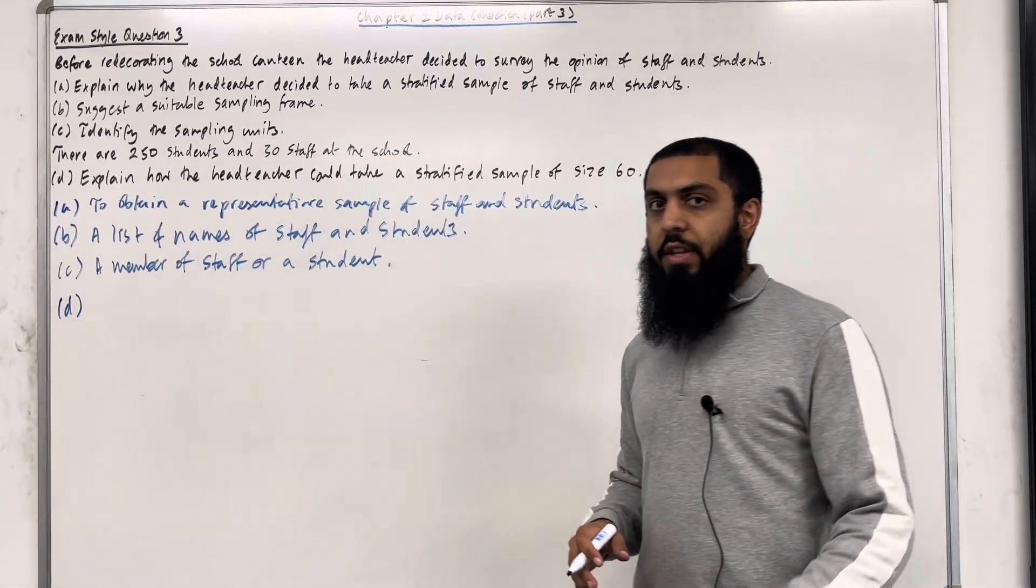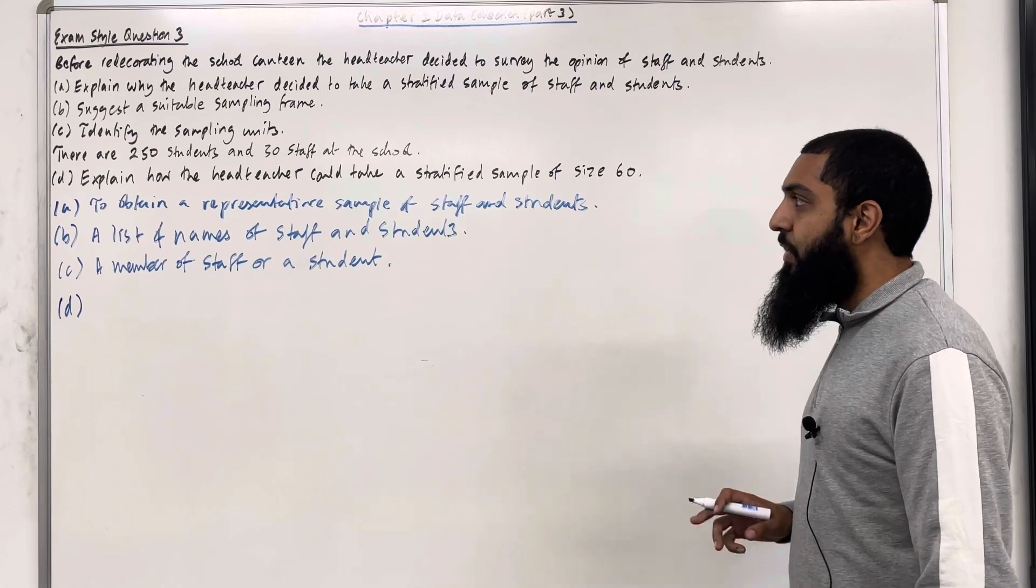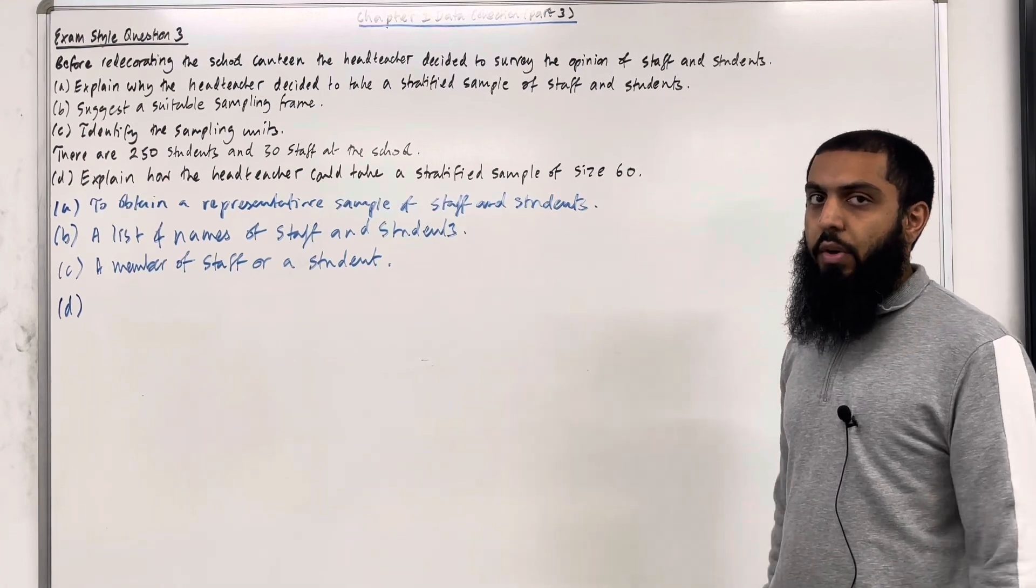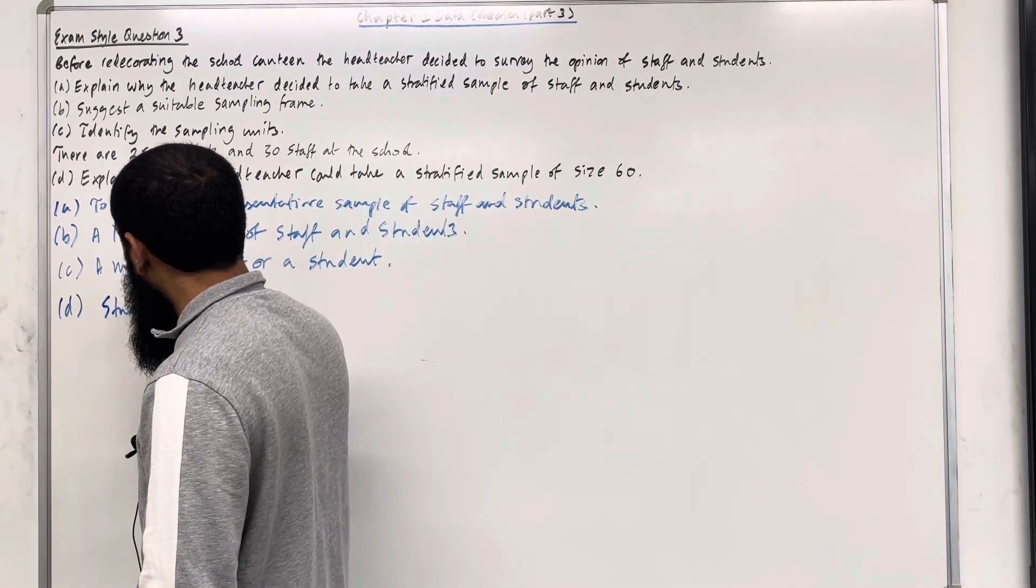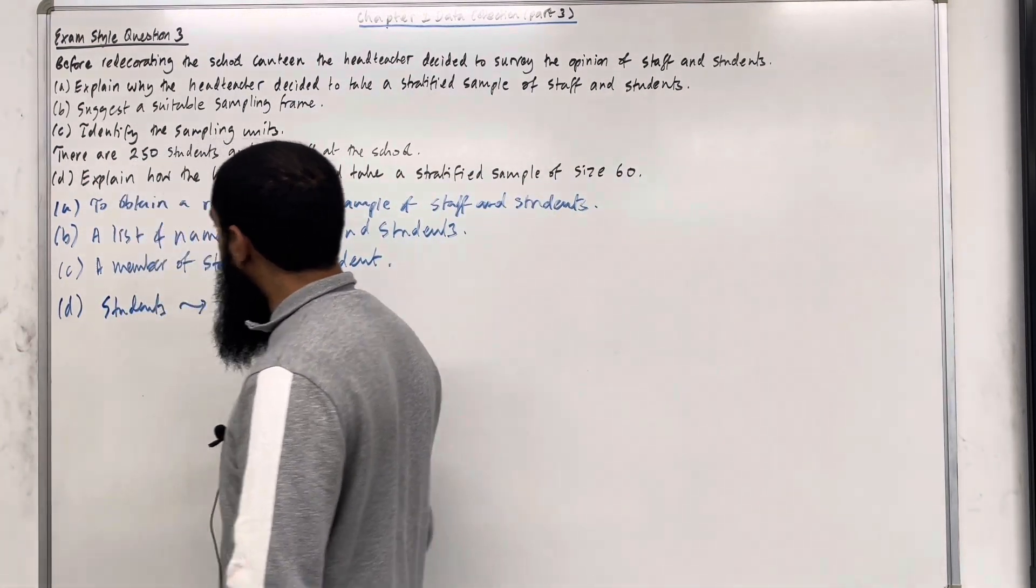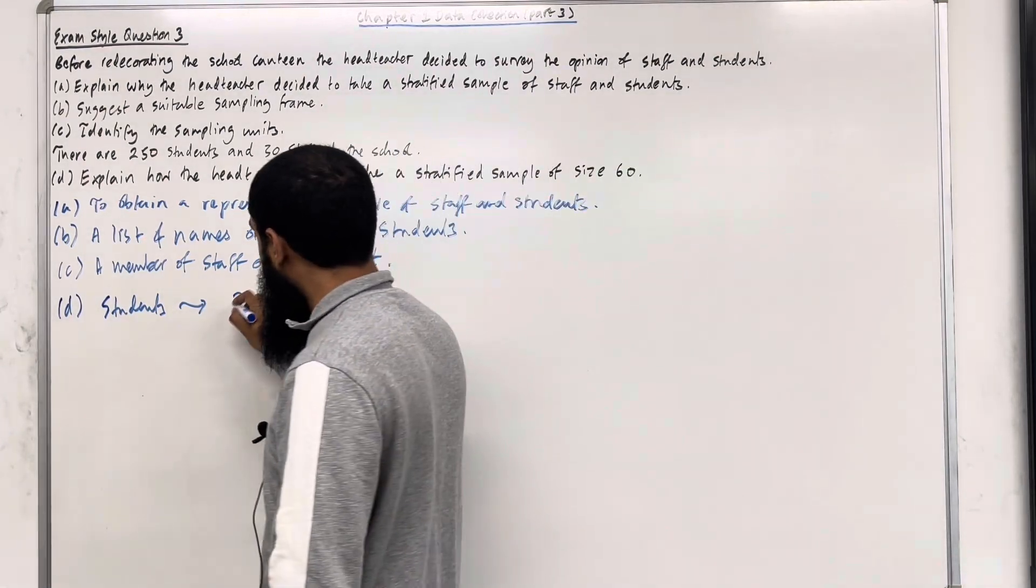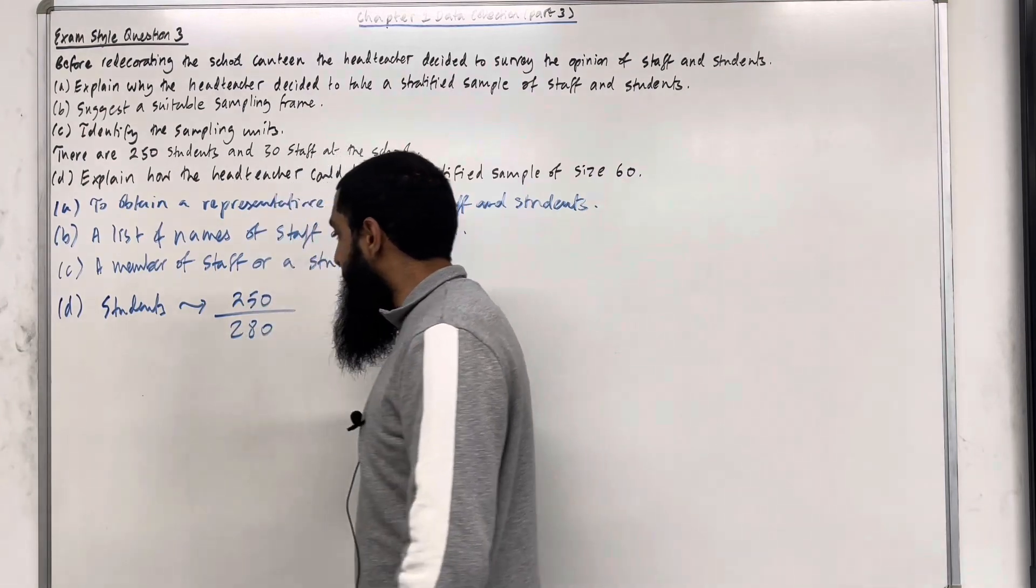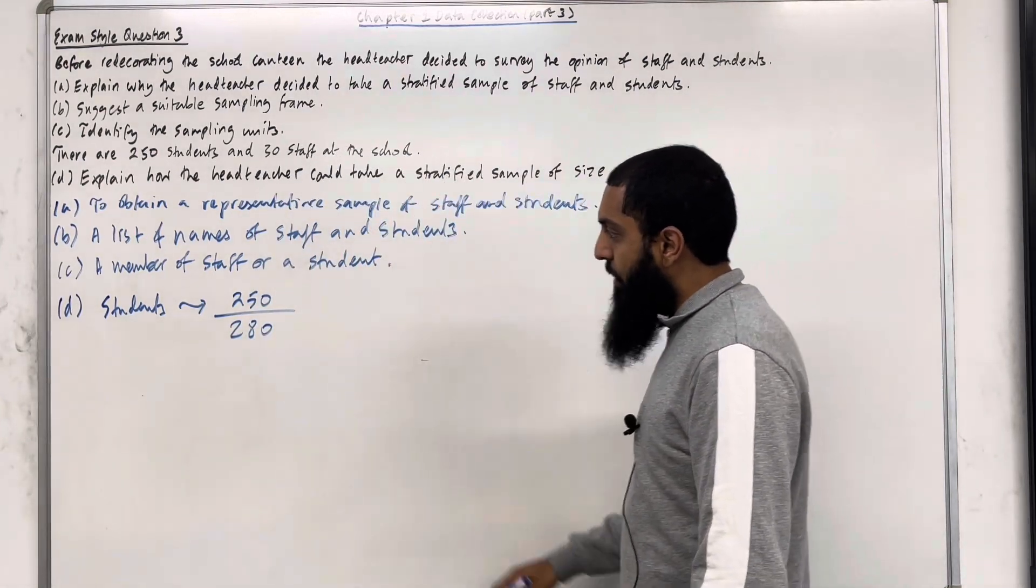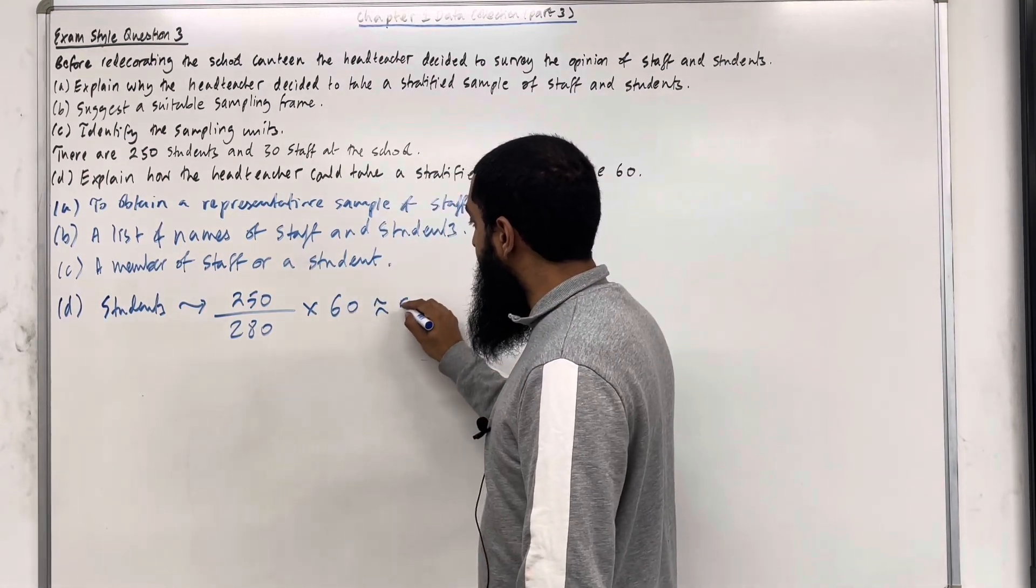Firstly, we're going to calculate the number of students that we need in our sample size of 60 and the number of staff members that we need in our sample size of 60. Let's start off with students. So with students, we are looking at 250 students out of a possible 280 staff and students multiplied by the sample size of 60. So this gives me roughly 54.